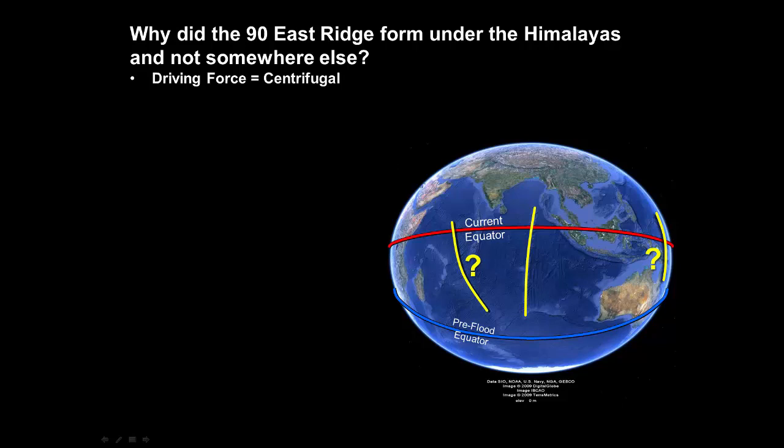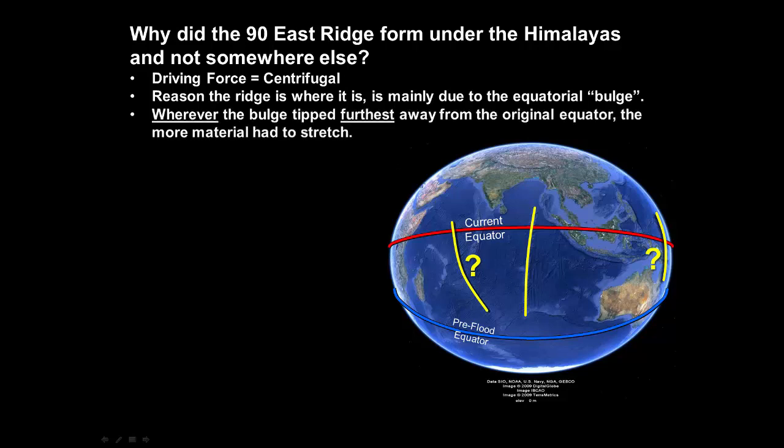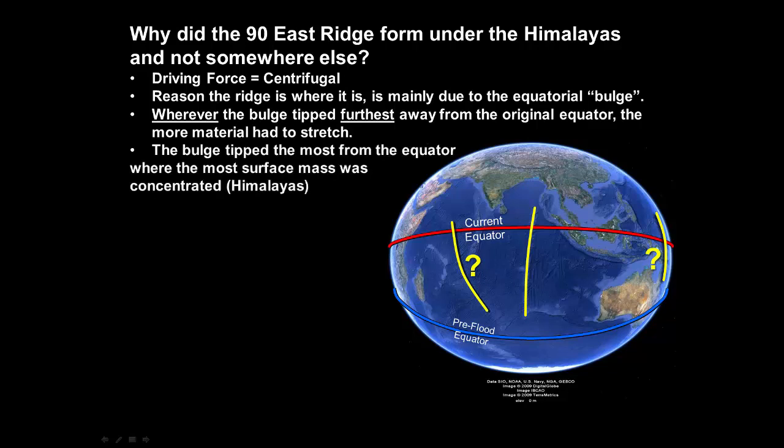The main driving force was due to the centrifugal force as the Earth's bulge tipped away from the equator. The way in which the bulge tipped away from the equator determined where the rip would occur. As we'll see, where it tipped the most, the material was correspondingly stretched more before reaching equilibrium. The greatest tipping from the equator occurred in line with the location on the surface where the mass was the most concentrated, the Himalayas. These are the answers, but they may not be so easy to see and understand, so let's step through the situation in detail.